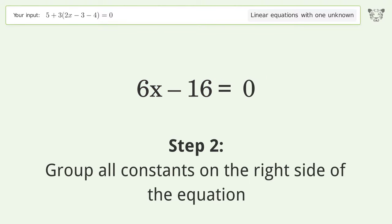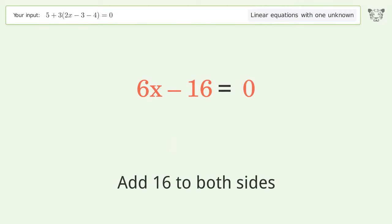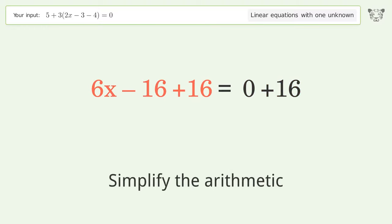Group all constants on the right side of the equation. Add 16 to both sides. Simplify the arithmetic.